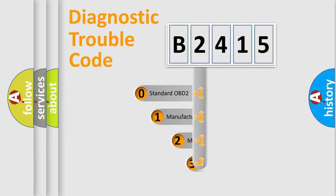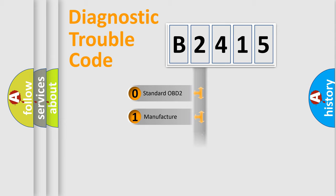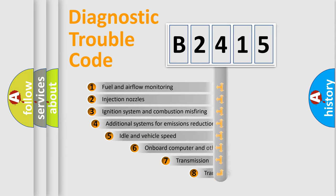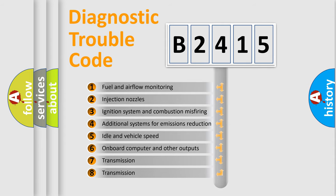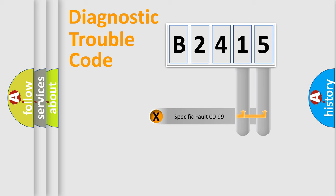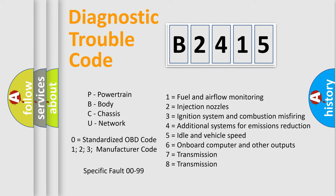This distribution is defined in the first character of the code. If the second character is expressed as zero, it is a standardized error. In the case of numbers 1, 2, or 3, it is a more specific expression of a car-specific error. The third character specifies a subset of errors, and this distribution is valid only for the standardized DTC code. Only the last two characters define the specific fault of the group.